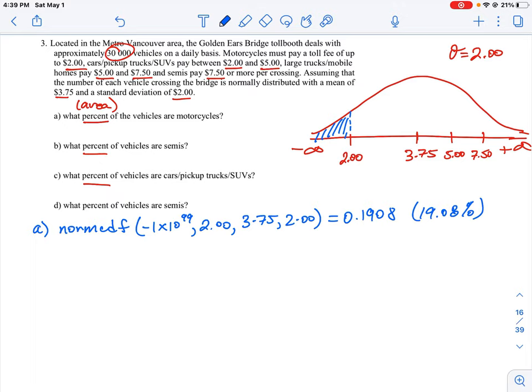That represented about 20 percent of the vehicles. A further question they could ask is what is the number of motorcycles, which is possible to calculate now because we know there were 30,000 vehicles in the sample and we know that 19.08 percent of those vehicles were motorcycles. We can do a simple calculation: 30,000 times 0.1908 equals 5,724 motorcycles that crossed the bridge. They didn't ask for that part, they just wanted the area, which is the 19 percent.